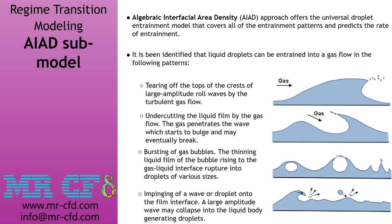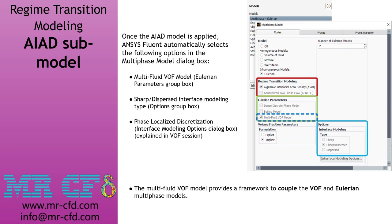Liquid droplets can be entrained into gas flow by: tearing off the tops of crests of large amplitude roll waves by turbulent gas flow; undercutting the liquid film by gas flow; bursting of gas bubbles; or impinging of waves or droplets onto the film interface. When you enable the AIAD model, some sub-models are enabled automatically such as multi-fluid VOF model, sharp or dispersed interface modeling, and phase localized discretization. More info on these terms is available in the VOF concept session.